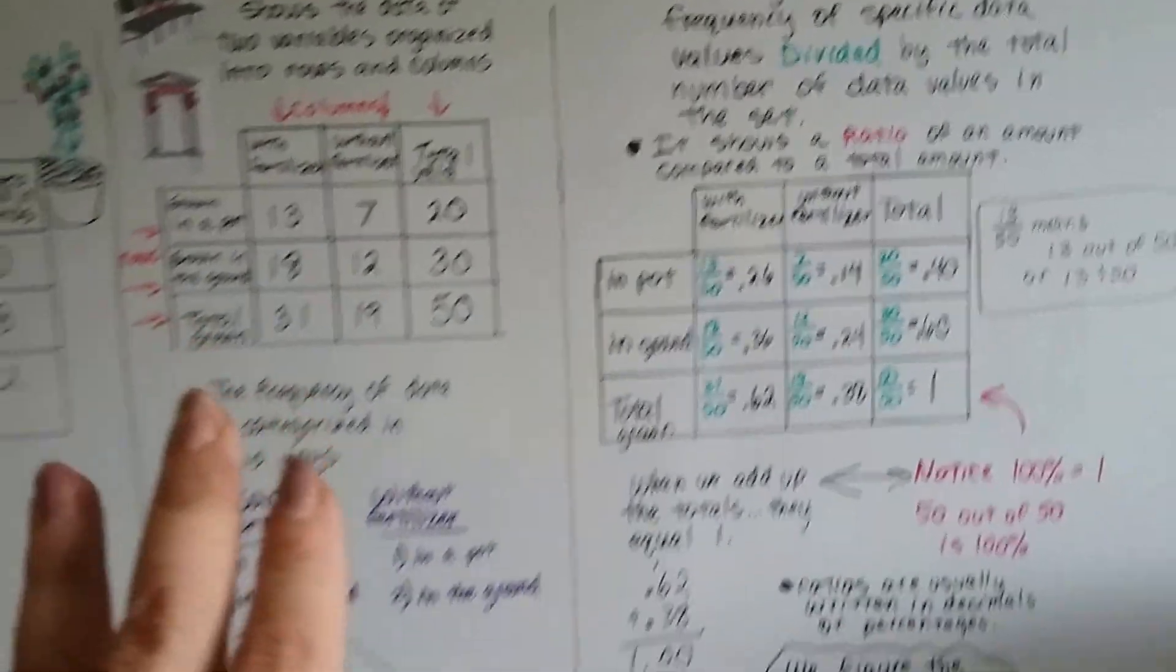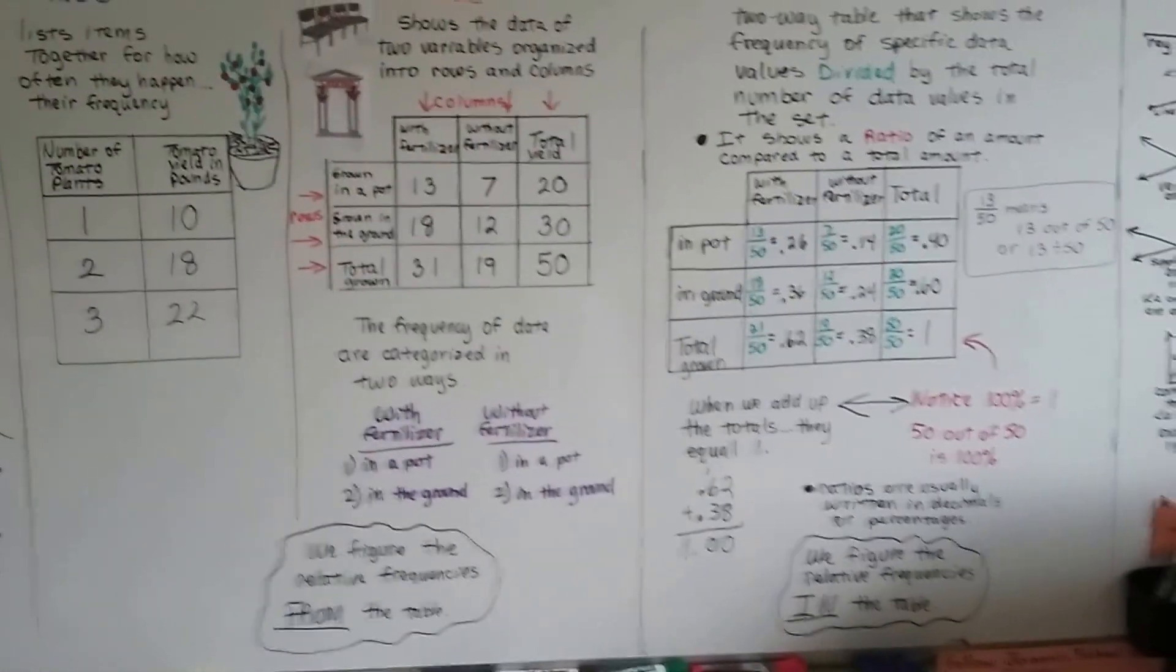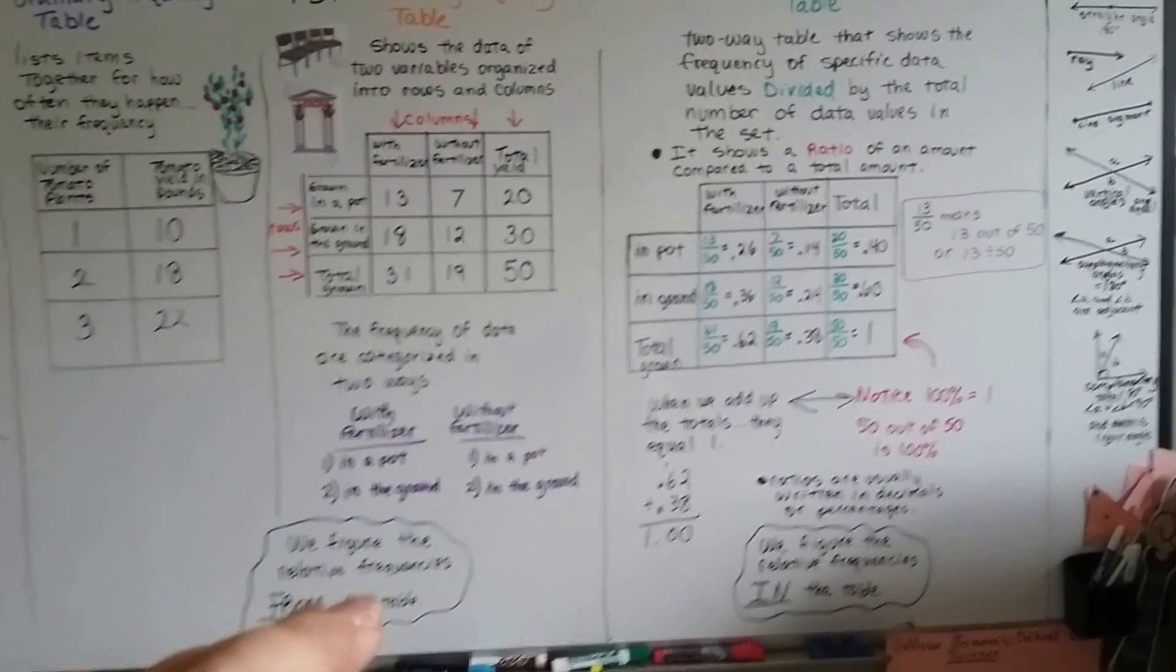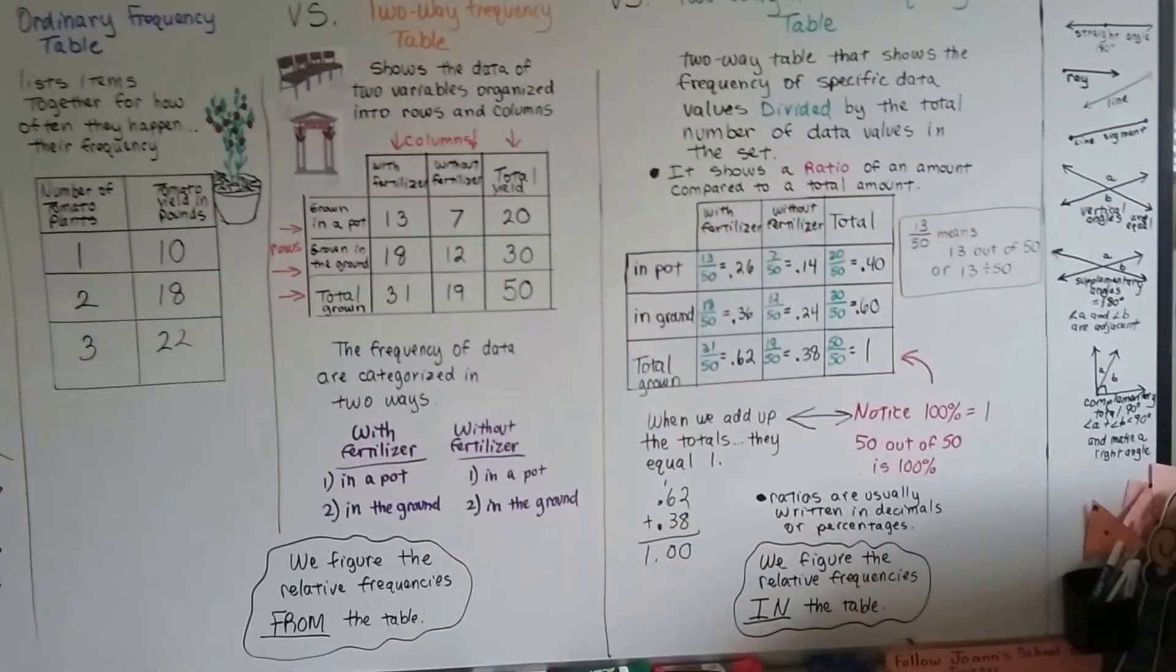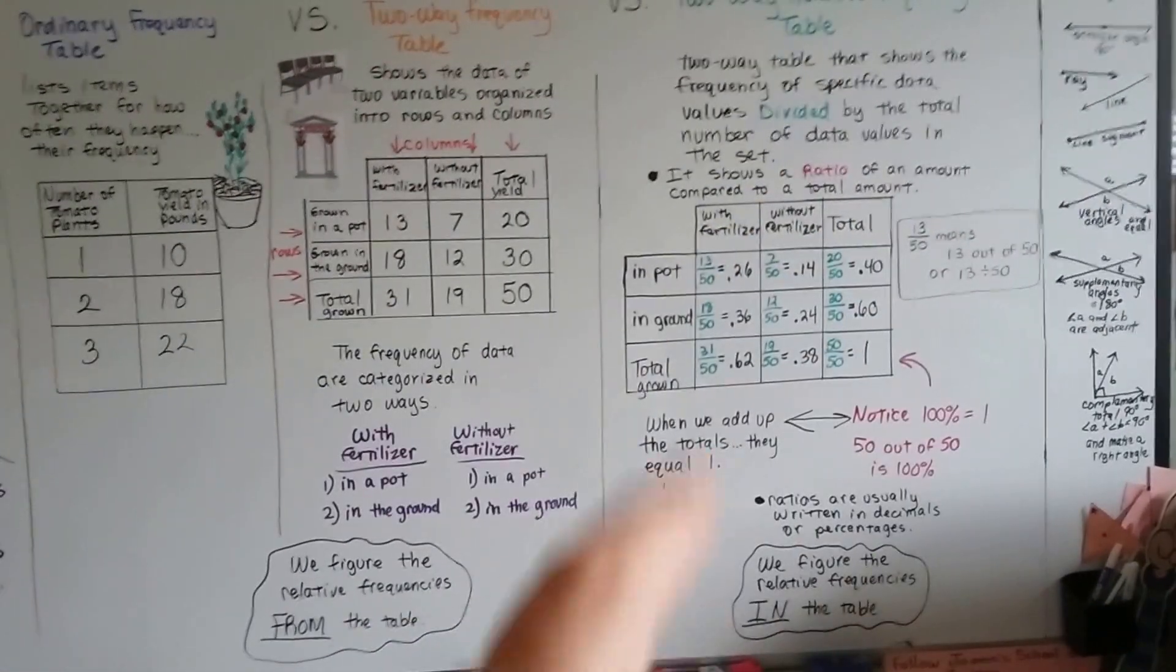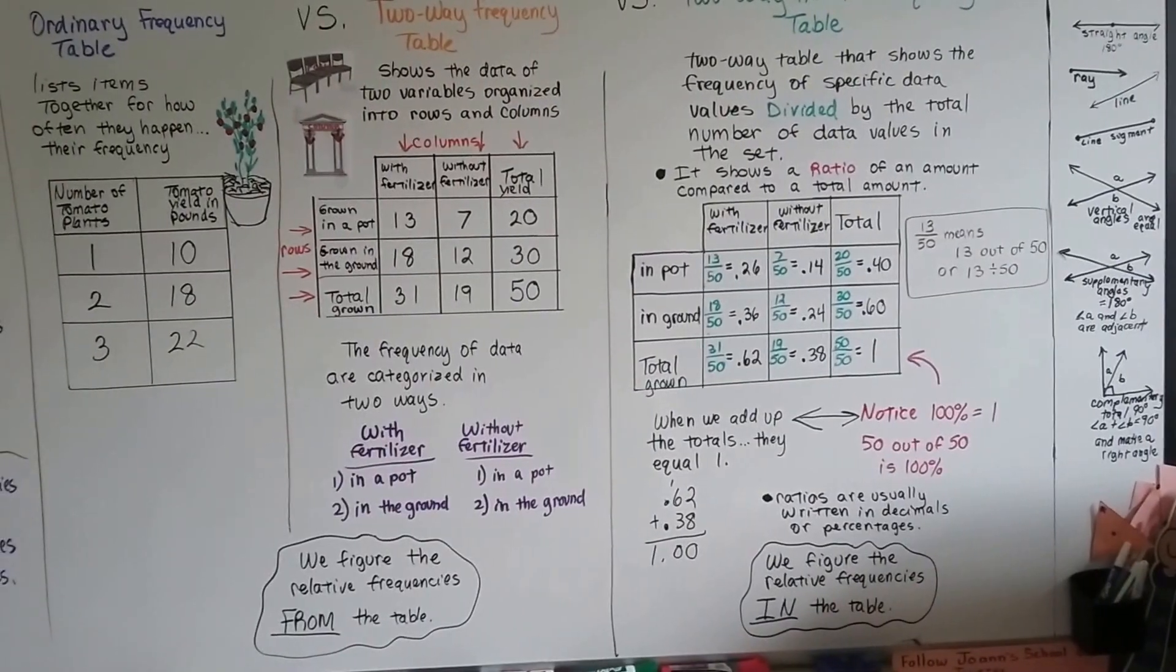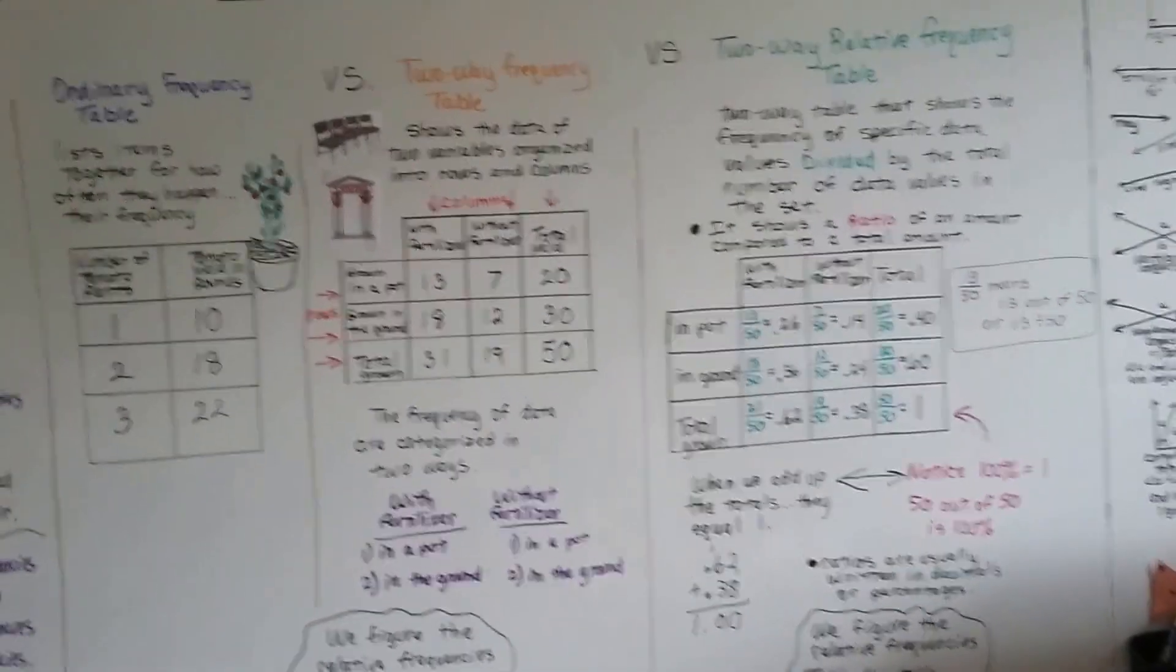So the only difference that we can see right off the bat is that we had to use this information to find the relative frequencies, and in this table, it's all figured in it. So in one nice glance, we can see all our information. See? It's in the table.